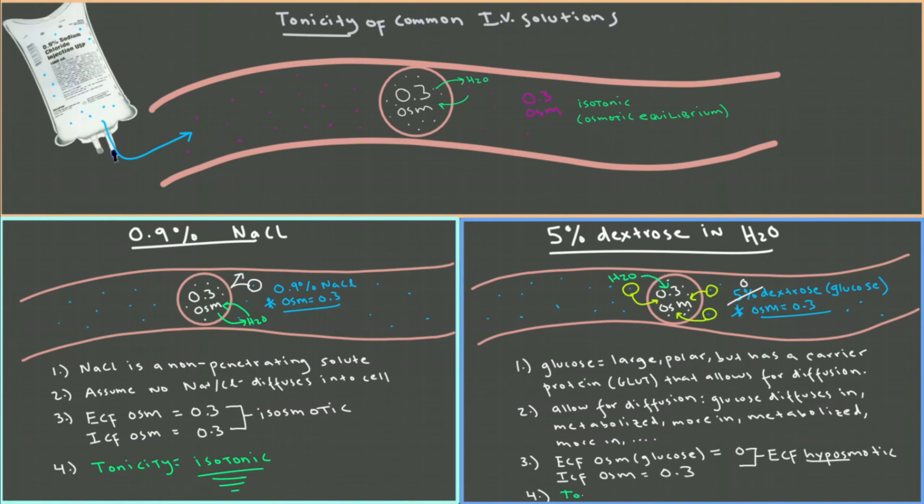And since water always goes towards regions of higher osmolarity, water will go in, meaning that tonicity of this solution is hypotonic. The cell swelled up like a hippo and is at risk of exploding.